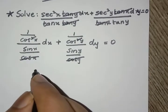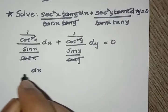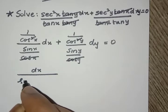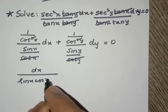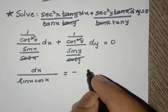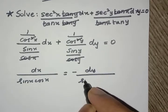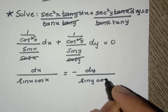So we get dx by sin x cos x is equal to minus dy by sin y cos y.